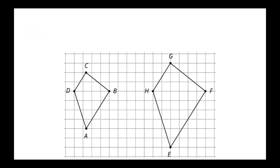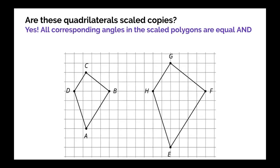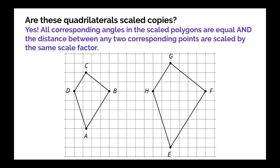Third example. Are these quadrilaterals scaled copies? In this case, they are scaled copies, yes, because all corresponding angles in the scaled polygons are equal. And also, the distance between any two corresponding points are scaled by the same scale factor.